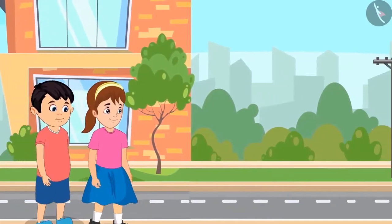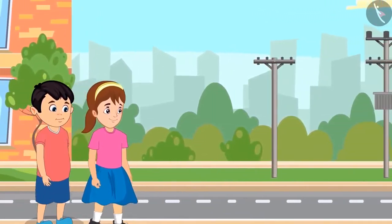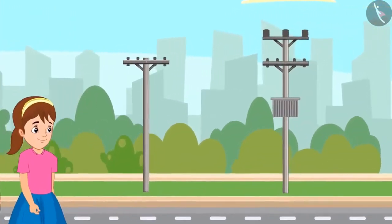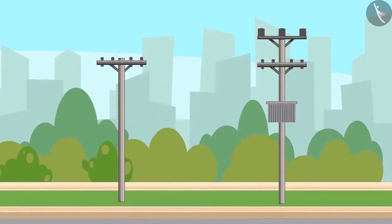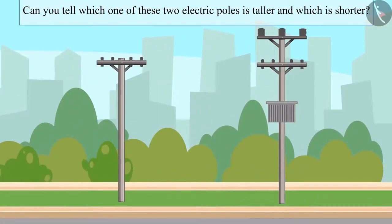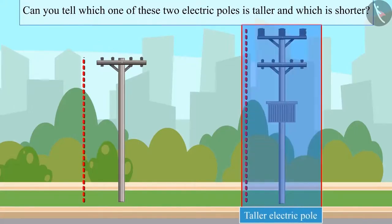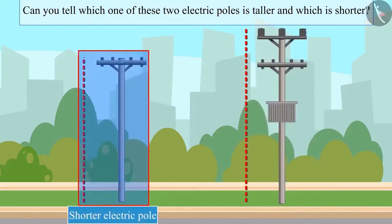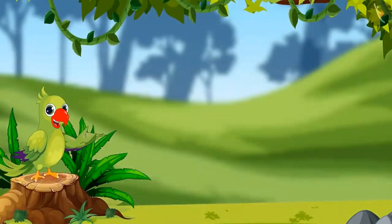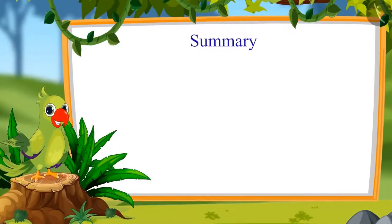After walking a little further, Chotu and Aarti saw two electric poles. Children, can you tell me which of these two electric poles is taller and which one is shorter? Yes — this pole is taller and this one is the shorter one.